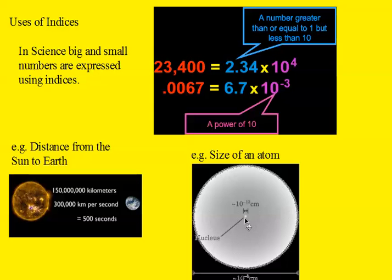A nucleus right at the centre atom has a diameter of 10 to the negative 13 centimeters. The diameter of the atom, it'll be hard to read here, but it's 10 to the minus 8 centimeters. So, there's some examples of where indices are used.